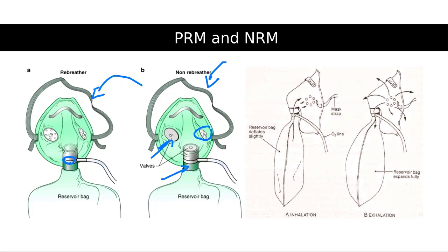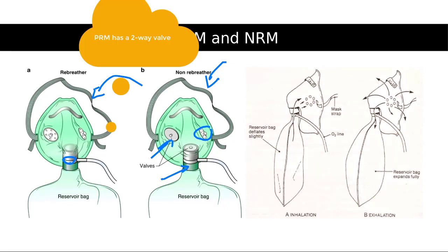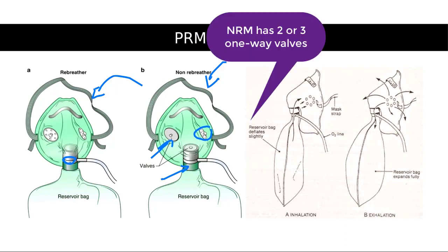This is identical to the non-rebreather mask, with the exception that the one-way valves are removed from the mask. It's a two-way valve that permits the patient to rebreathe about one-third of his or her exhaled volume. That's the partial rebreather nomenclature.